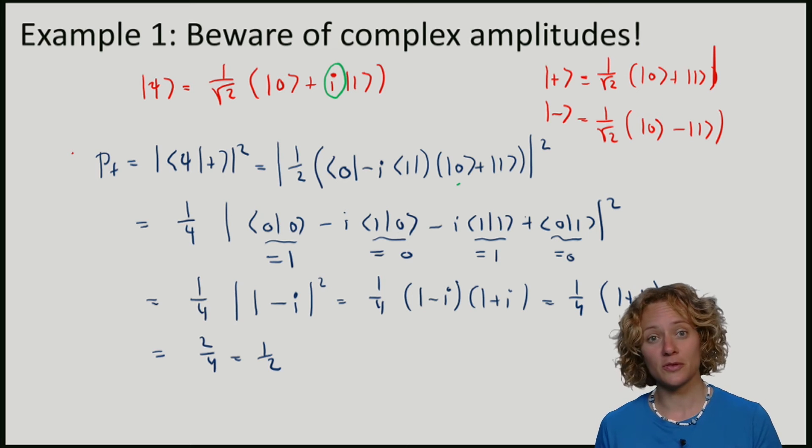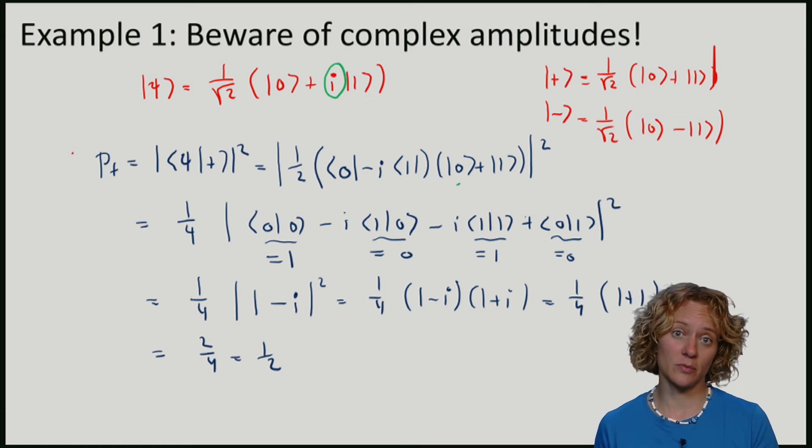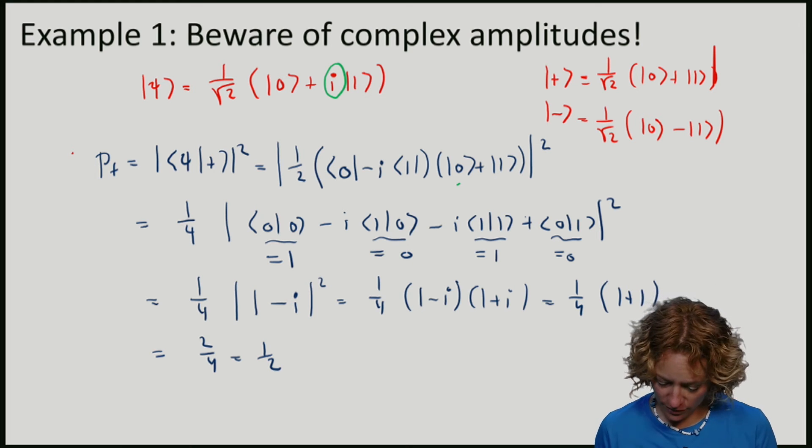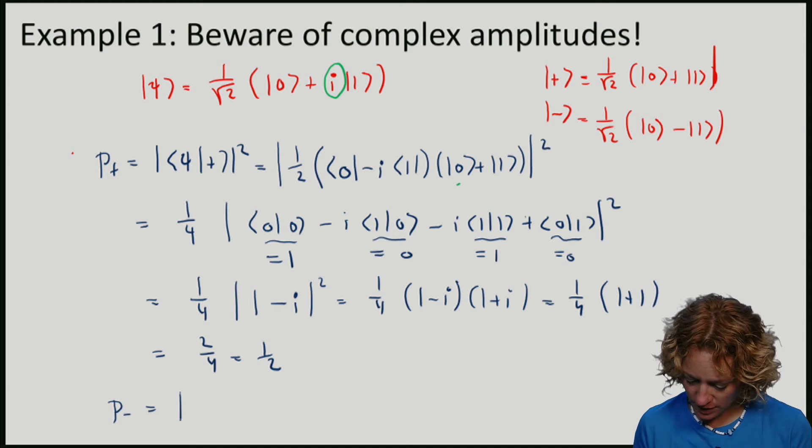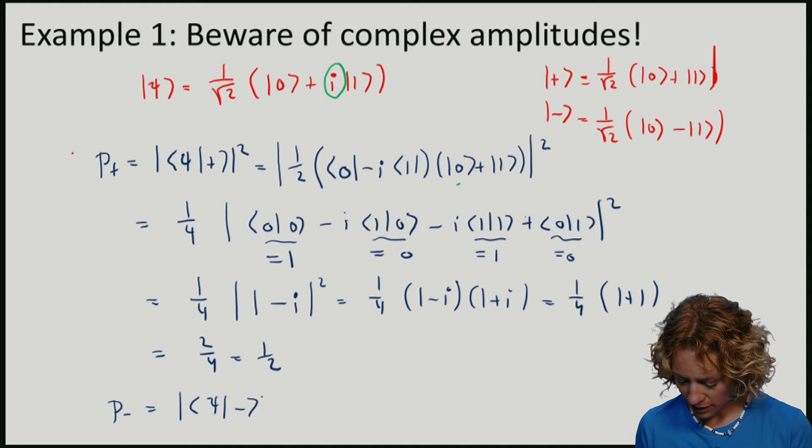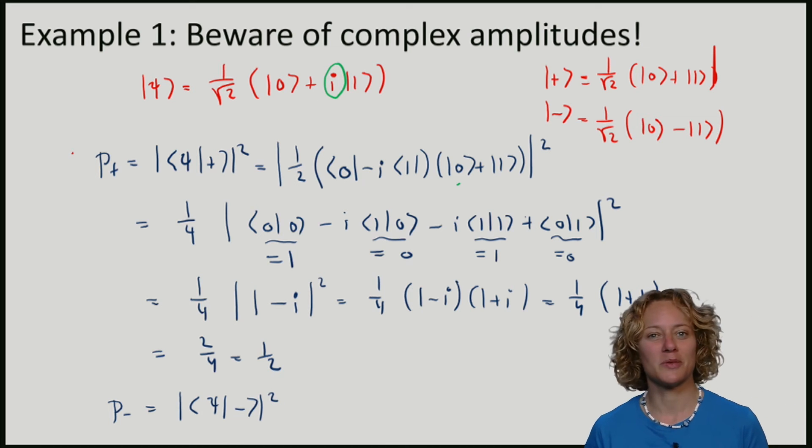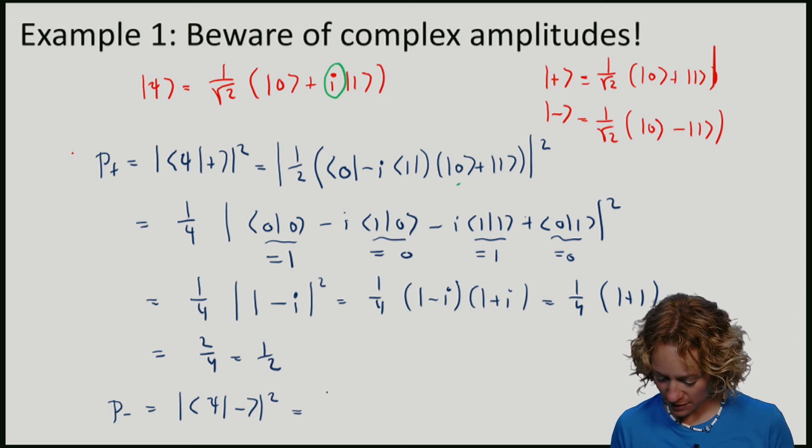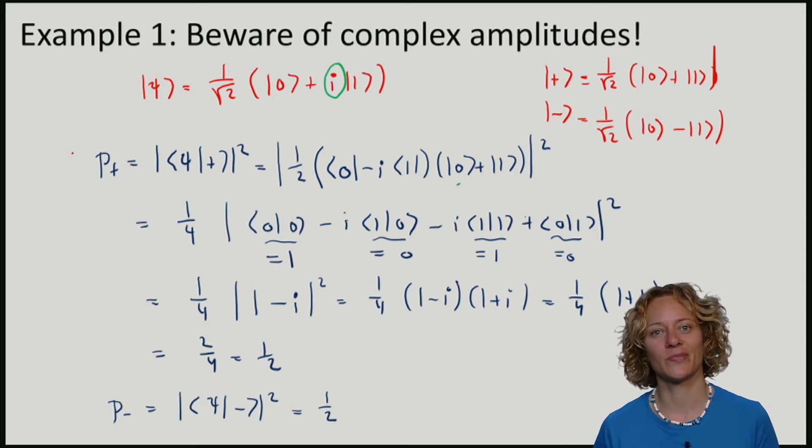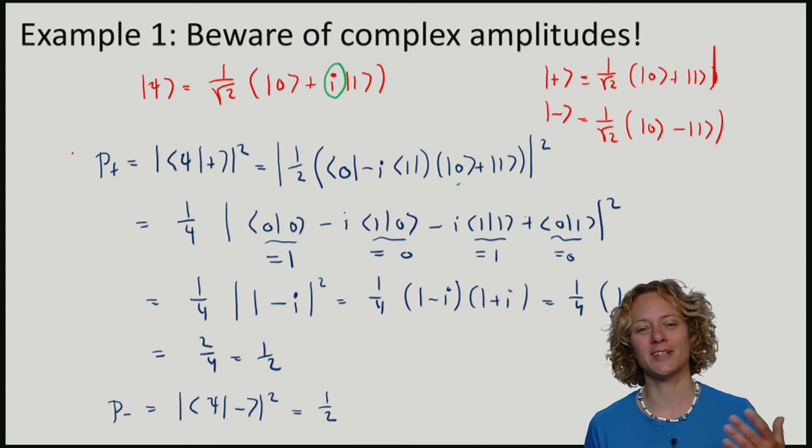So of course you could also now compute the probability of getting outcome minus. And if I were to do that, again by our rule, the probability is given by the inner product between Psi and minus. Because probabilities should add up to one, it is clear that what we should be getting here is also a half. And I encourage you to do this calculation.